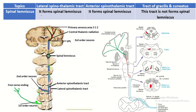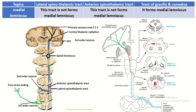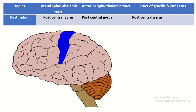Now, the spinal lemniscus. The spinal lemniscus is part of the lateral spinothalamic tract and anterior spinothalamic tract. The tract of gracilis and cuneatus is not related with the spinal lemniscus. The axon of the second order neuron crosses the side and goes to the opposite side — this portion is known as the medial lemniscus. So the medial lemniscus is part of the tract of gracilis and cuneatus. The final destination is the post-central gyrus of the cerebrum, area number 3, 1, 2 — the primary sensory area.